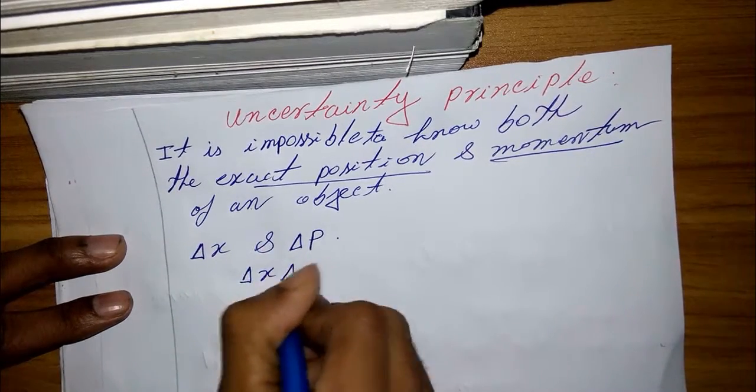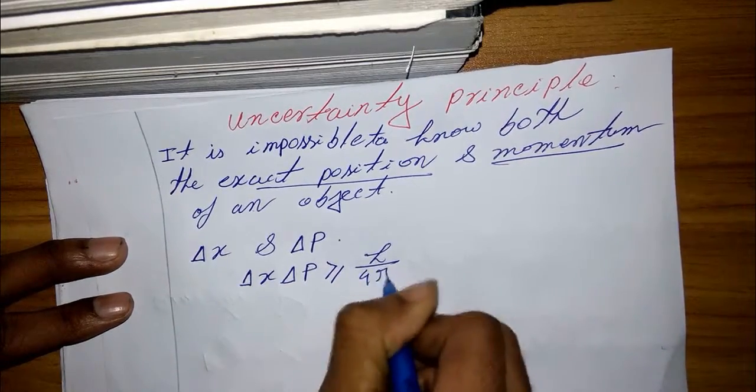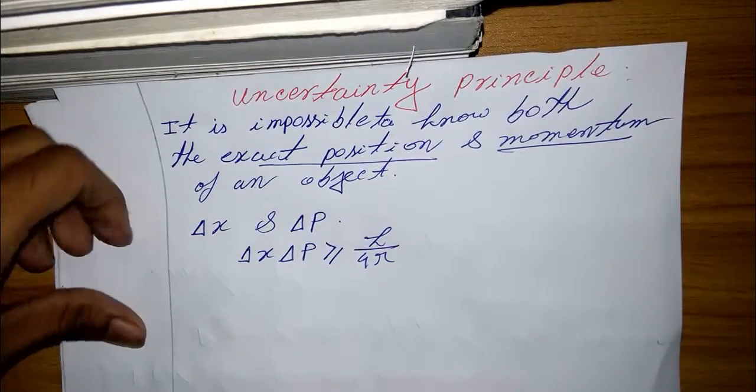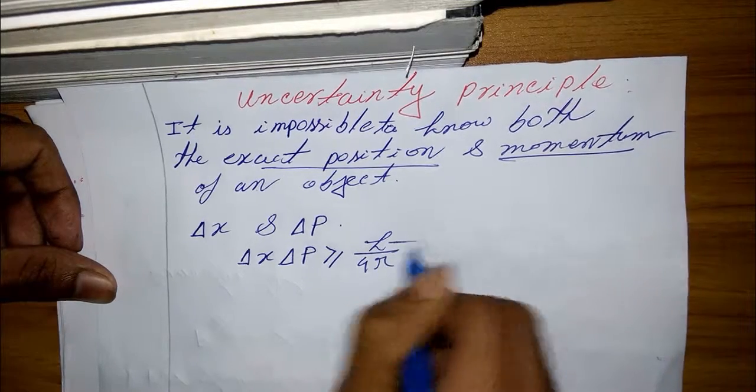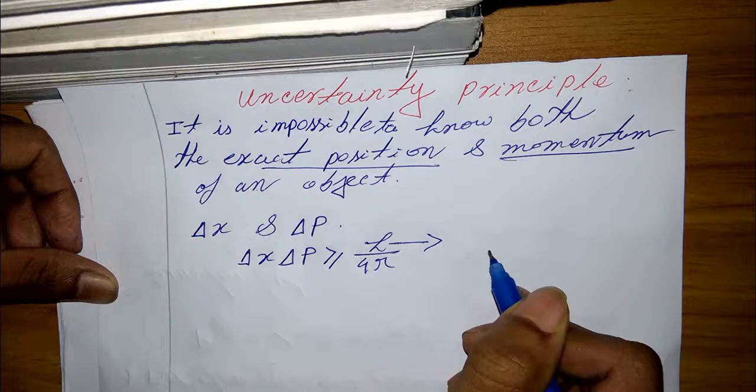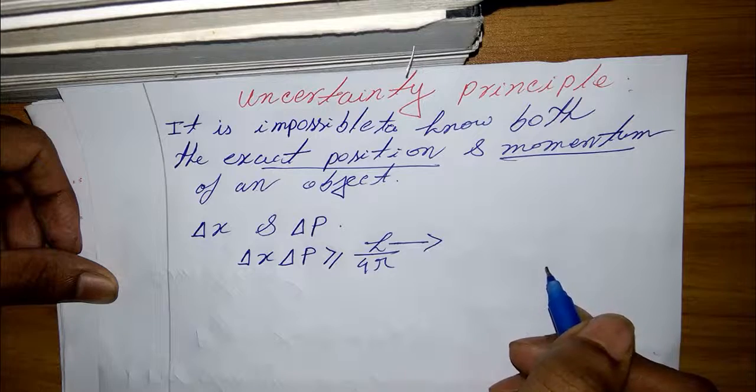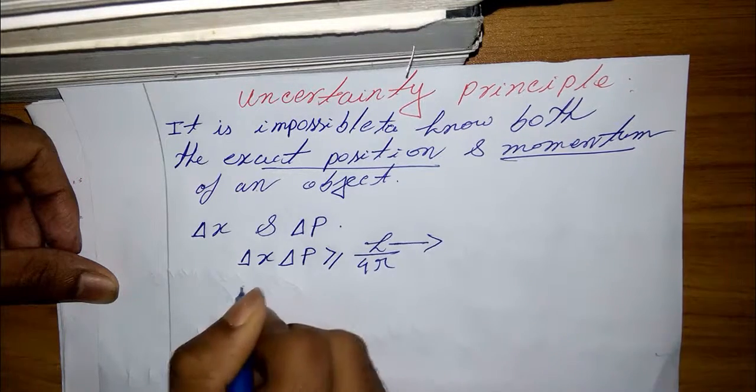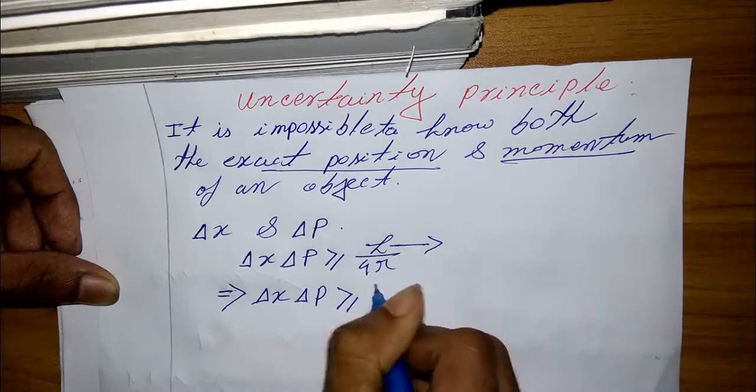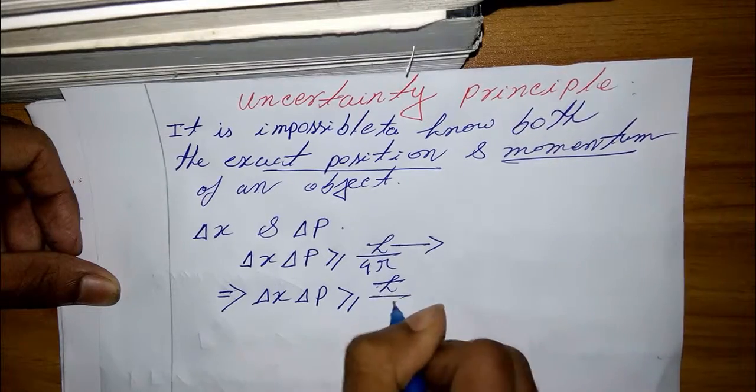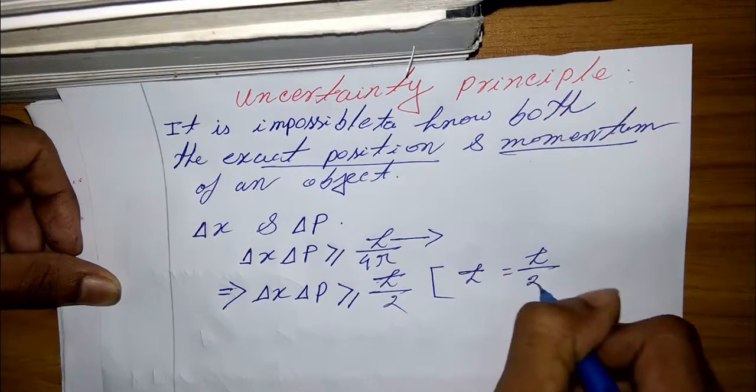del X del P greater than or equal to h by 4π. Here, h is Planck's constant, which value is 6.626 times 10 to the power minus 34 joules per second. After simplification, it will be h-bar by 2, where h-bar equals Planck's constant by 2π.